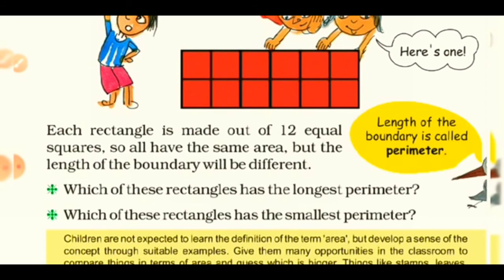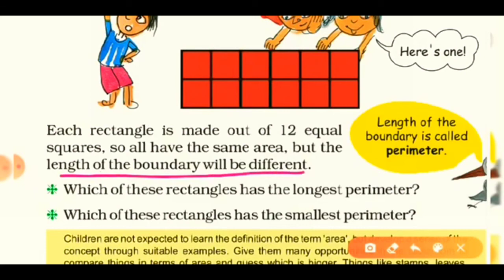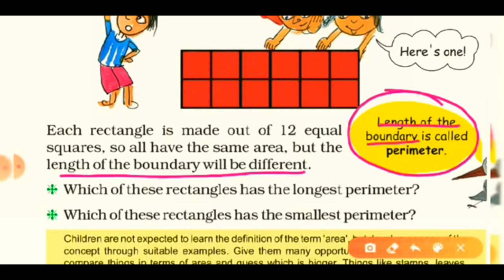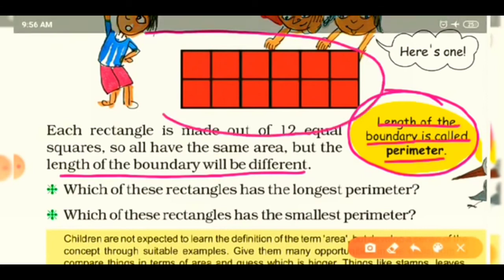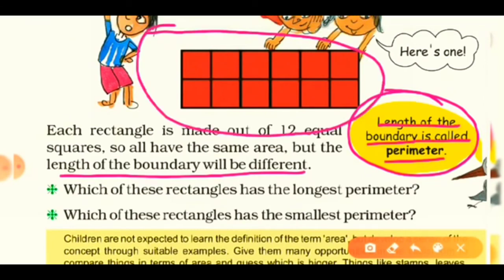But the length of the boundary will be different. The length of the boundary is called the perimeter. For example, in this rectangle made using 12 squares, the black boundary you can see around the shape is its perimeter. The outer length of a shape is known as its perimeter.